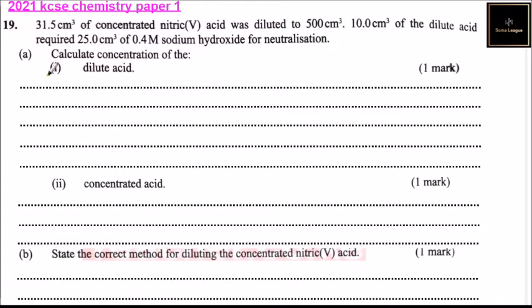Calculate the concentration of the dilute acid. Moles of sodium hydroxide equals 0.4 multiplied by 25, that is the volume, divided by 1000 to convert to cubic meters. This gives you 0.01.